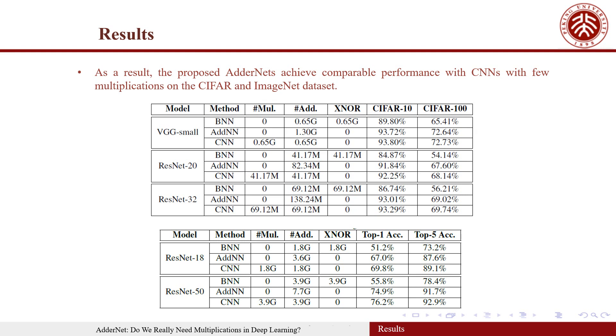And on the ImageNet dataset, AdderNets can achieve 74.9% top-1 accuracy and 91.7% top-5 accuracy, which demonstrate the effectiveness of the proposed method on large-scale image classification tasks.